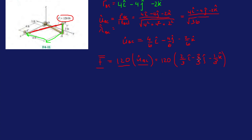The reason we're doing this is because now we have the force in vector format, and in order to determine the moment of force F about point O, we need that force as a vector. Once we do that, we can just take the cross product in order to calculate the moment. So now we need the distance from point O to the point of application — that's from the pivot point to where the force is being applied.